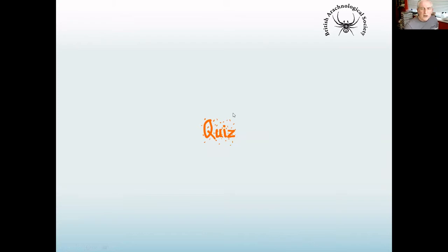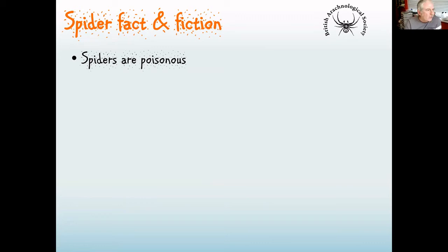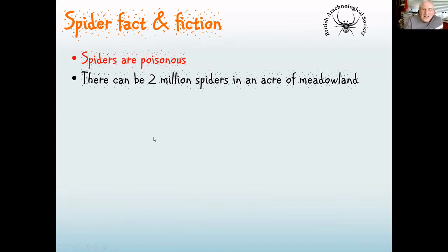Very quick quiz — true or false, you can score yourself. Spiders are poisonous. Well, spiders aren't poisonous — they're venomous. They inject venom into their prey, which makes them venomous. But you could quite happily eat a spider and it wouldn't poison you. There can be two million spiders in an acre of meadowland — that's a real statistic from William Bristow, who probably counted them in a yard square back in the 1930s and multiplied up, but there are a lot of small spiders.